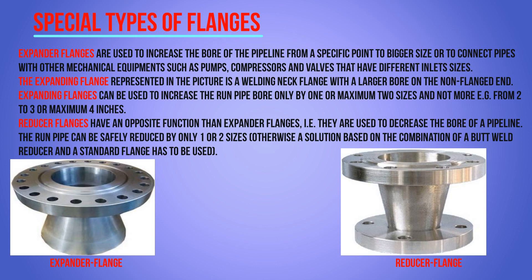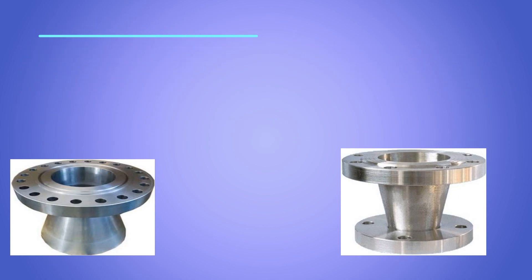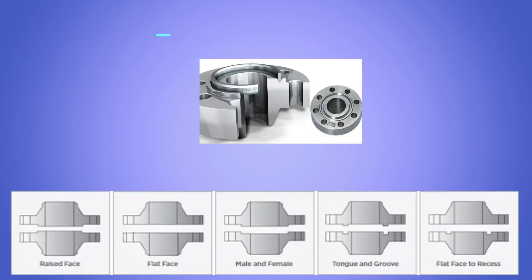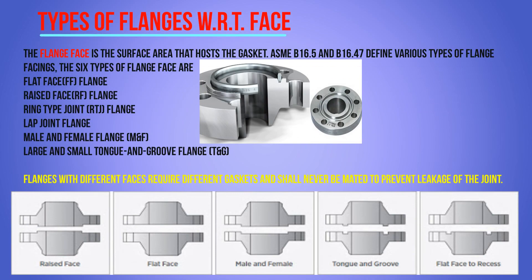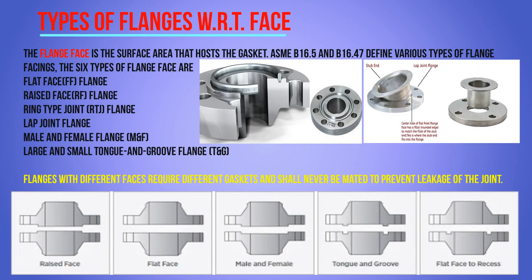A reducing flange has the opposite function compared to the expander flange and is used to reduce the bore of the pipeline. The run pipe size can be safely reduced by one or two sizes, but not more than two sizes. Otherwise, a solution based on the combination of a butt weld reducer and a standard flange must be used.